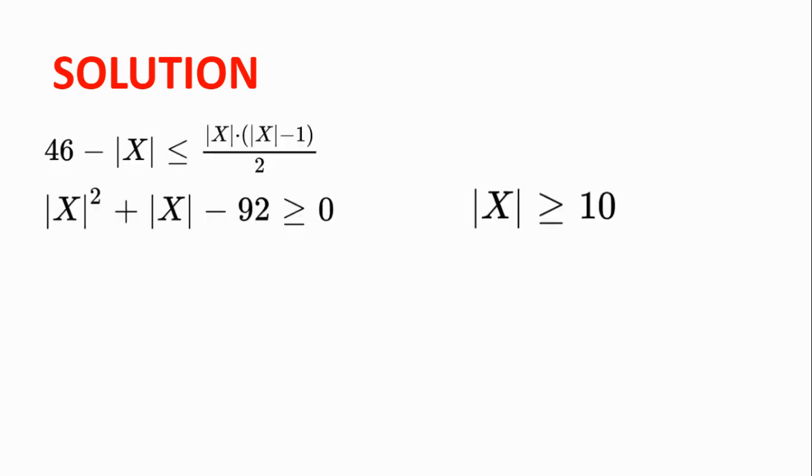Multiplying this by 2 and rearranging, we find that the number of students in X squared plus the number of students in X minus 92 is greater or equal to 0.